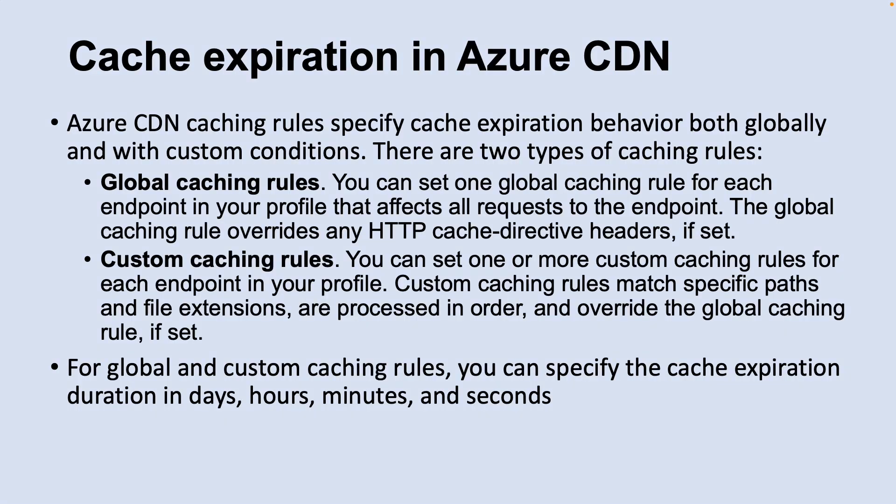Let's look at cache expiration in Azure CDN. Because a cached resource can potentially be out of date, it is important for any caching mechanism to control when content is refreshed. To save time and bandwidth consumption, a cached resource is not compared to the version on the original server every time it is accessed. Azure CDN caching rules specify cache expiration behavior both globally and with custom conditions, including global caching rules and custom caching rules. You can specify the cache expiration duration in days, hours, minutes, and seconds.